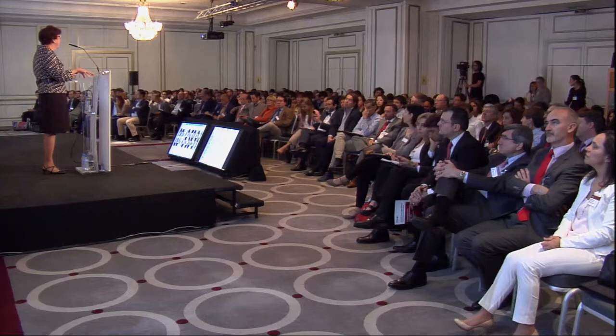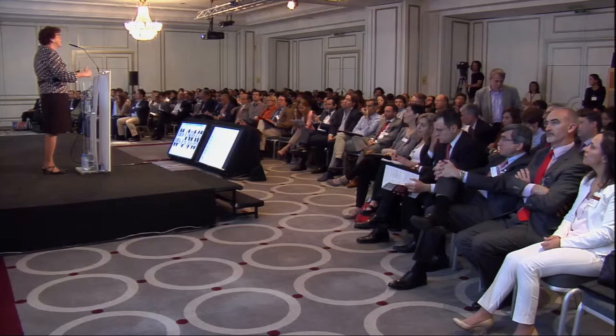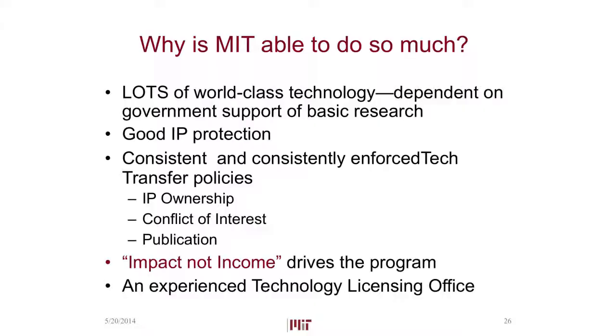Spin-out companies have become critical to our technology transfer. We average about 20 licensed companies a year — and many more companies come out of MIT than just those, including student companies and faculty companies not using MIT intellectual property. We have a lot of research, good IP protection, and enough of a patent budget that we can take a chance on filing a patent on anything that looks like it has a halfway decent chance of spinning out. We're not trying to cherry-pick.